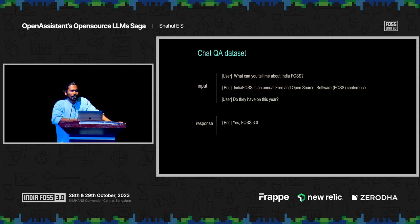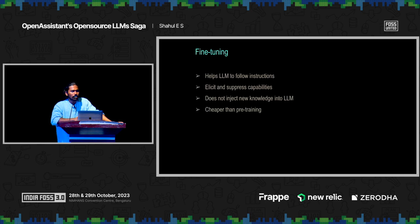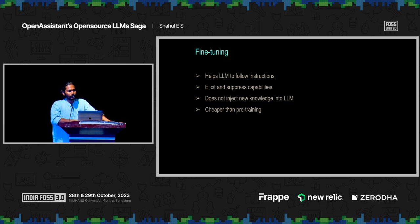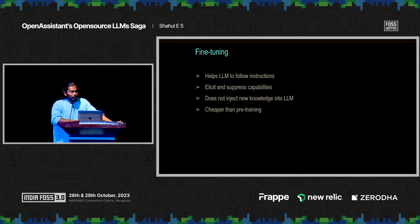Now we have a pre-trained model and a dataset to fine-tune it on. Fine-tuning is a highly misunderstood concept. A pre-trained model by nature is just a fancy autocomplete — it can't understand or follow instructions or chat with you. Fine-tuning takes this pre-trained model and elicits instruction-following capability, making it act as an assistant that can chat back and forth. That is the goal of fine-tuning: to take pre-trained models and make them follow instructions very well.